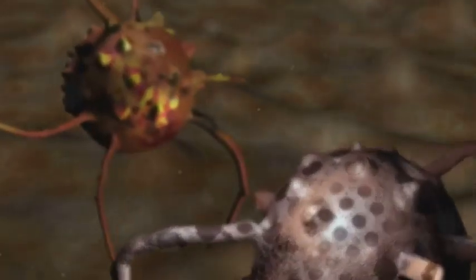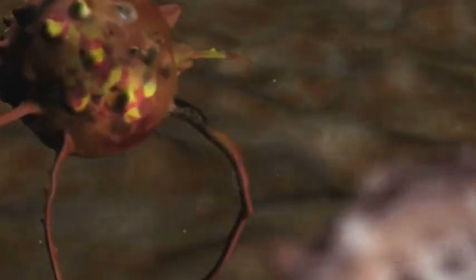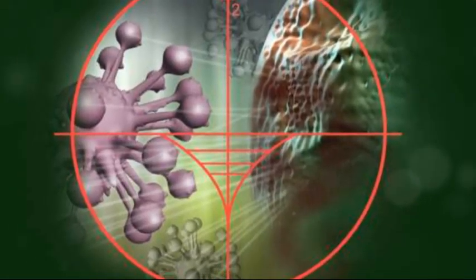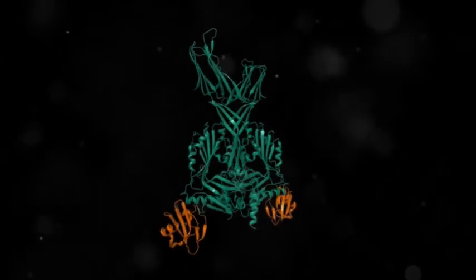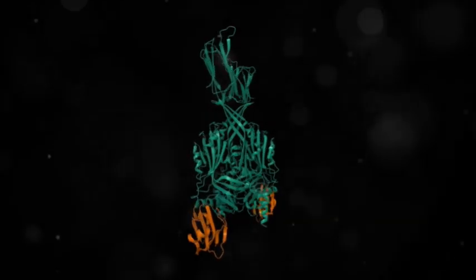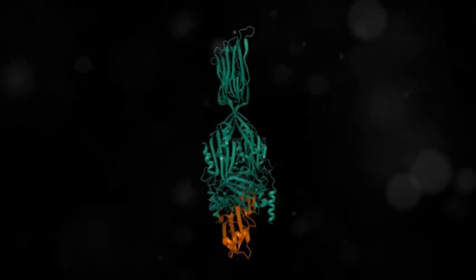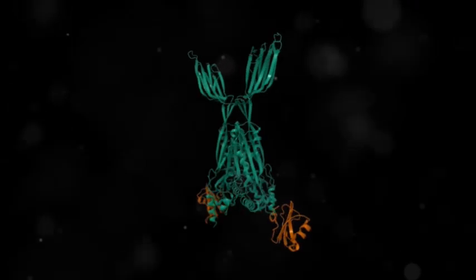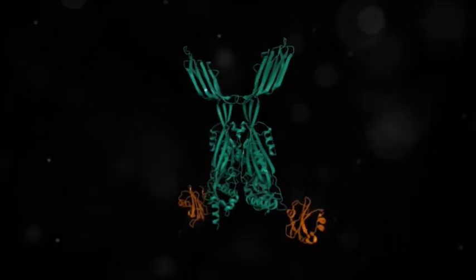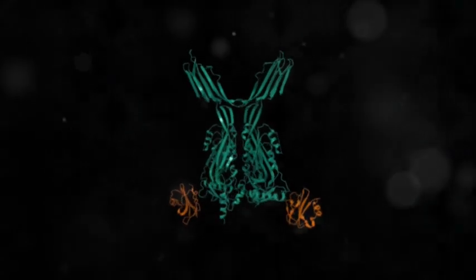Studies indicate that the B chain's high affinity for cellular carbohydrates significantly enhances the delivery of the A chain, which inactivates ribosomes with remarkable efficiency.